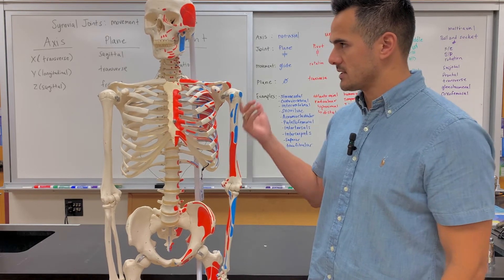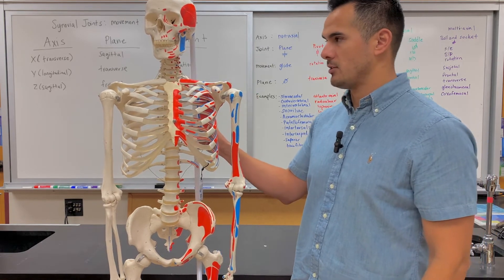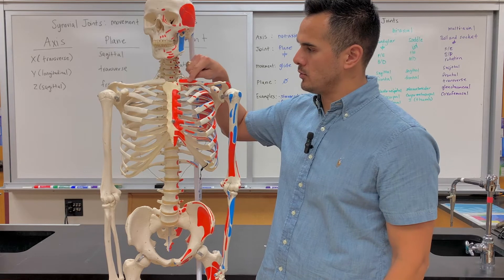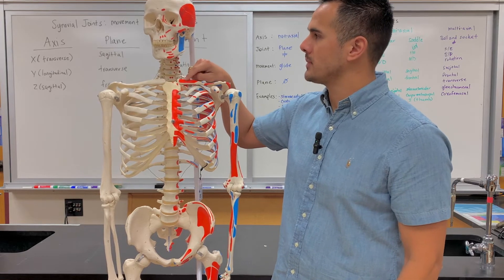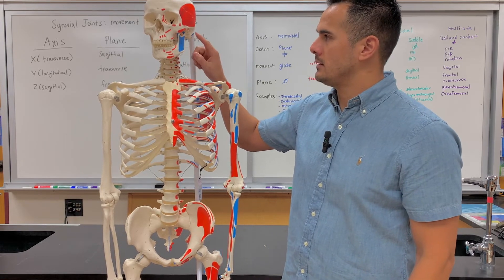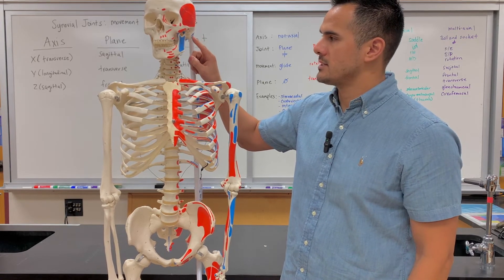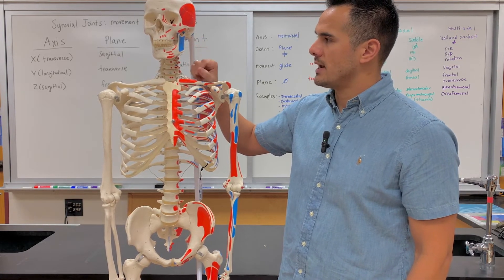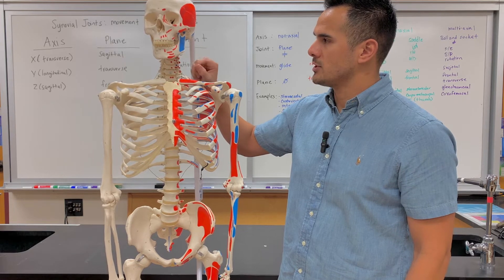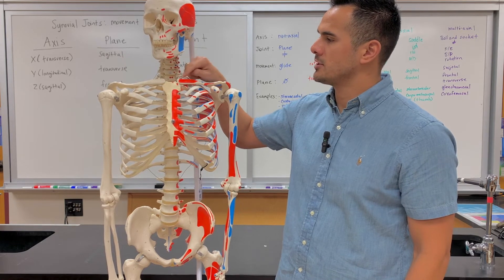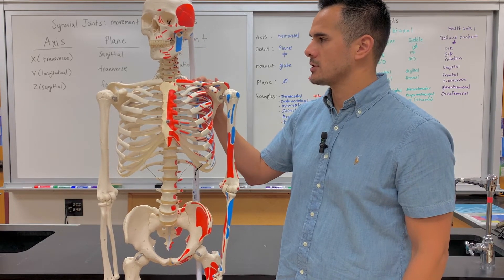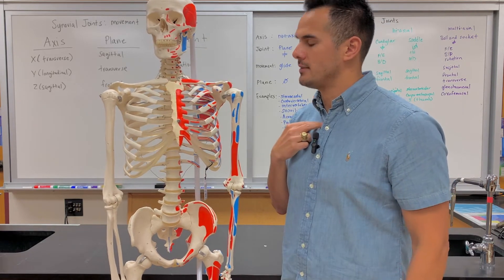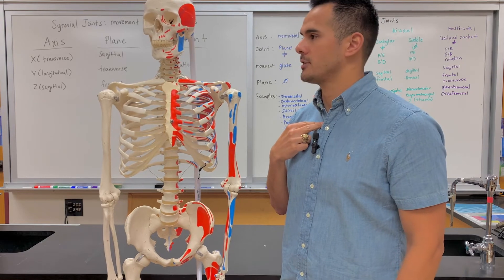Let's look at the sternocleidomastoid. The origin is here and then it attaches at the mastoid process. As that muscle contracts, the insertion moves towards the origin, and as you do that, neck flexion occurs.